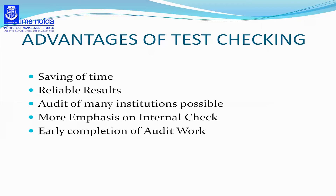The internal check system is a system in which the work of one employee can be checked by another employee, whose work is in turn checked by a third employee, and the chain goes on. In test checking, more emphasis is laid on the internal check system, and the auditor gives the owner suggestions on how to remove deficiencies in the internal control system. The fifth advantage is early completion of audit work — only a few transactions are analyzed, so audit work is completed much faster, benefiting the auditor while also not disturbing the client's work for a long period.